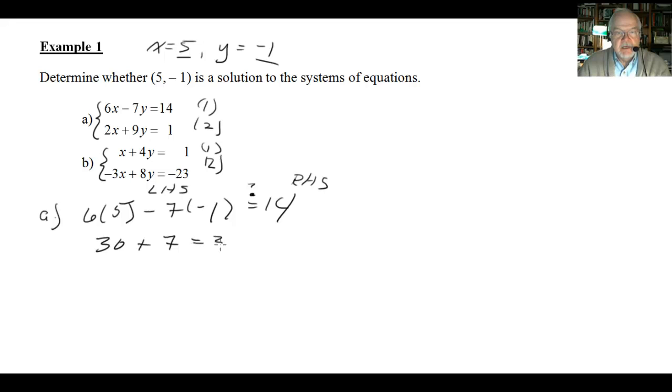Oops, this doesn't look good. That's 37. 37 is definitely not equal to 14. Since this equation is now false, then (5, -1) is not a solution.